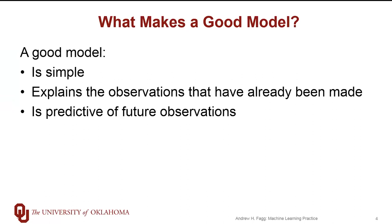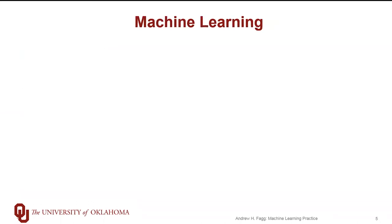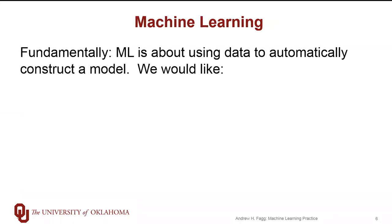This very much parallels the scientific process, where we gather data and construct a model, we make predictions about perhaps very different scenarios, and then we ask whether or not the model holds in those new scenarios. And if it doesn't, that suggests that we need to be taking a different approach to our modeling. So humans have been constructing models for a very long time. Machine learning fundamentally is about automatically constructing these models, given the data that we have available to us.